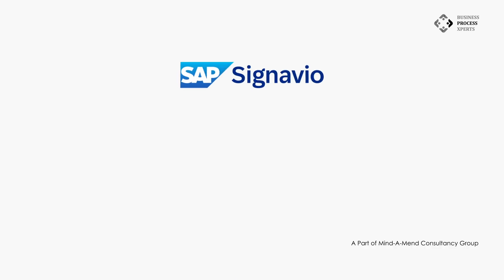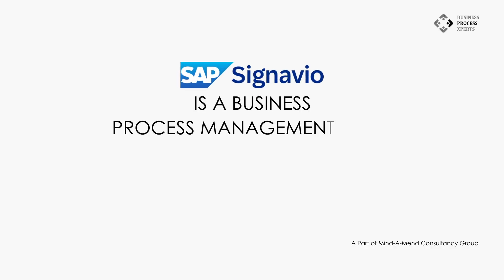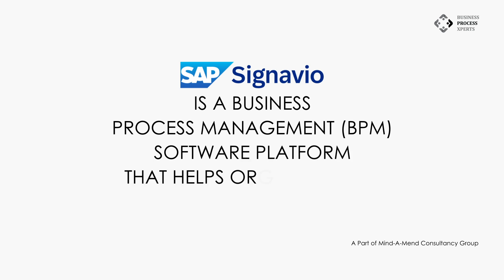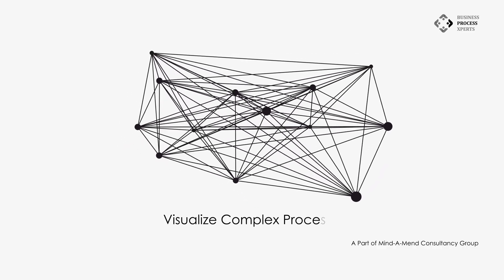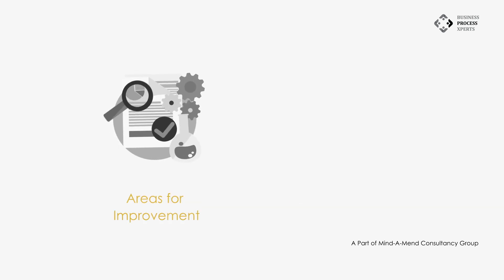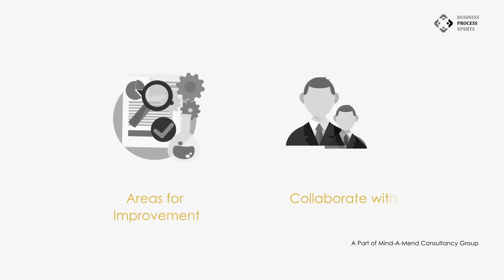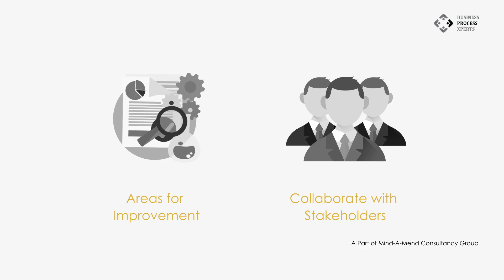Both aim to optimize and ensure smooth functioning, whether of a human body or business operations. SAP Signavio is a BPM — Business Process Management — software platform that helps organizations model, analyze, and improve their business processes. It is a powerful tool that can be used to visualize complex processes, identify areas for improvement, and collaborate with stakeholders to make changes.